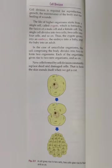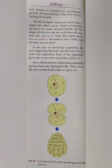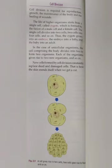Lastly, we are going to revise about cell division. Cell division is needed for reproduction, growth, maintenance of the body and healing of wounds. Our life starts as a single cell formed by the fusion of the male cell and the female cell, called a zygote. The single cell divides into two, two become four, four become eight, and so on. The zygote develops into an embryo, the embryo into a baby, and the baby into an adult. New cells formed by cell division constantly replace the dead and damaged cells in our body.